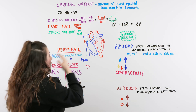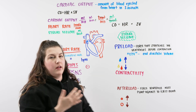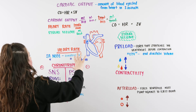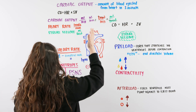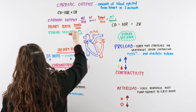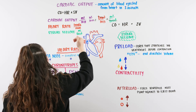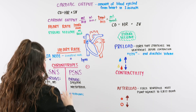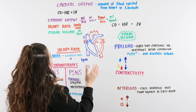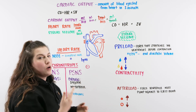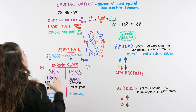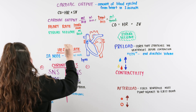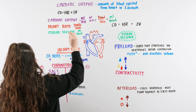Cardiac output is dependent upon other things going on in our body. Specifically for this video, we're going to talk about heart rate and stroke volume, and both can be broken down further. We know that cardiac output is the amount of blood ejected from our heart in one minute. If we alter our heart rate, we can alter our cardiac output.